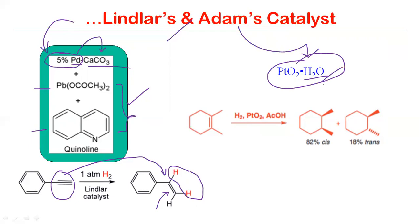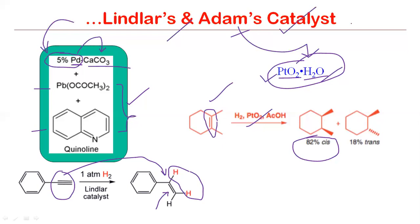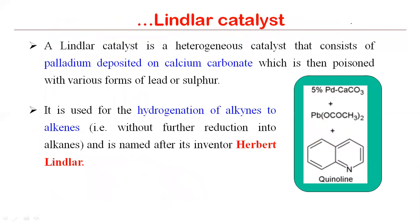Adam's catalyst is hydrated platinum oxide, also shown as PtO₂·H₂O. When we treat a functionality, particularly an alkene, with this catalyst we get the hydrogenated compound where addition of hydrogen takes place. So the two important conversions are: from Lindlar's catalyst we get alkyne to alkene, and from Adam's catalyst we get alkyne to alkane. This was first invented by Herbert Lindlar, and in his honor we call it Lindlar's catalyst.